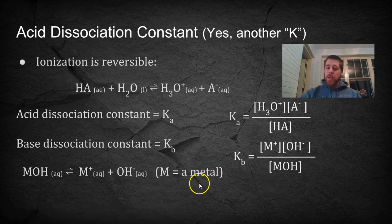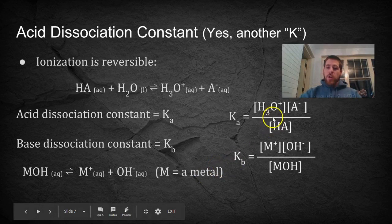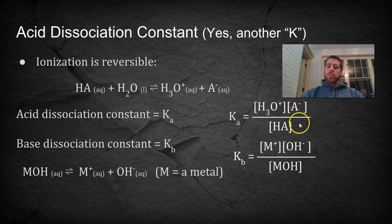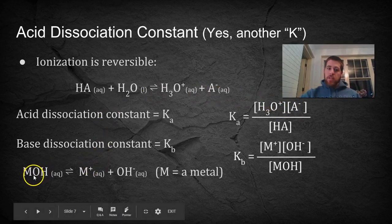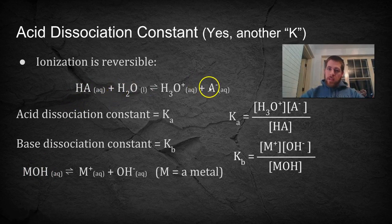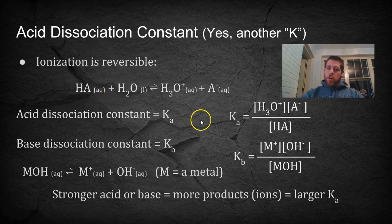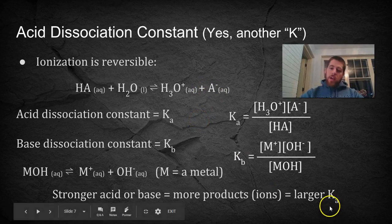Now the extent to which something ionizes affects the K value. So a really large K value means that it's a pretty strong acid, it's largely products, it's largely ions. A really small K value means that it's largely still undissociated. It's still the metal hydroxide, or it's still the HA. Very little of it has dissociated. So the stronger the acid or the base, the more products you're going to have, and that's going to result in a larger Ka, or you could say KB if it's a base.